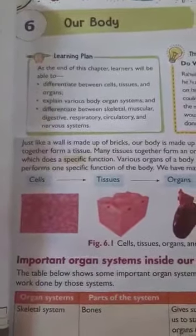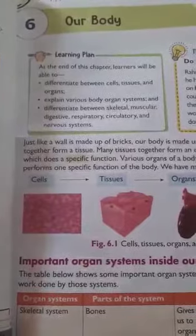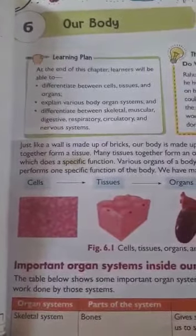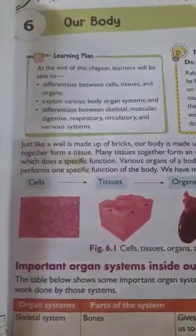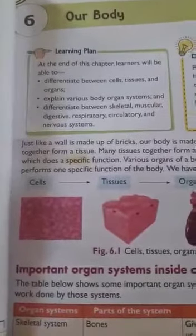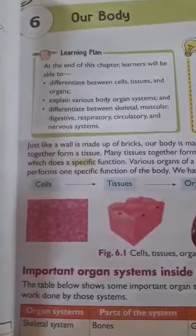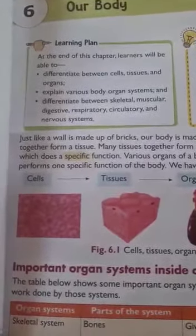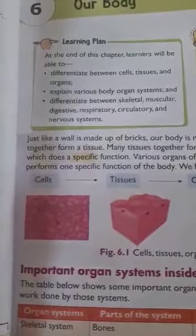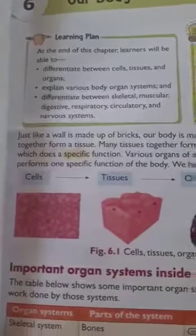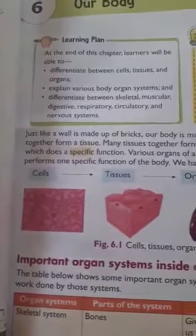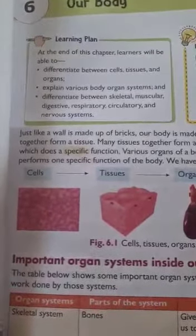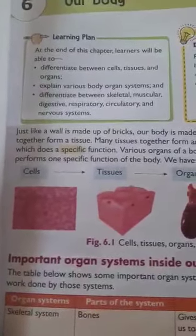Assalamualaikum children, welcome to the science class for Grade 3. Today we are going to start lesson number 6: Our Body. At the end of this lesson, you will be able to differentiate between cells, tissues, and organs, and explain various body organ systems like the skeletal system, muscular system, digestive system, and respiratory system.